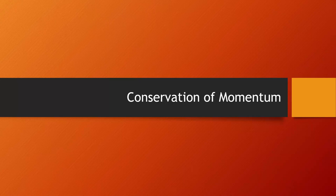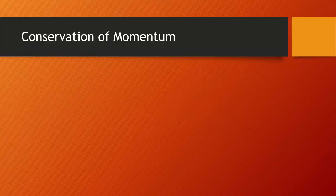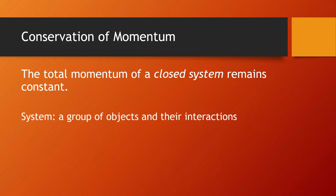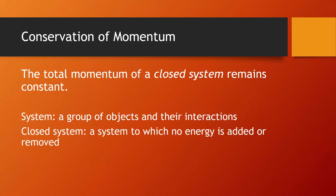This lesson is about conservation of momentum. The law of conservation of momentum states that the total momentum of a closed system remains constant. A system is a group of objects and their interactions, and a closed system is a system to which no energy is added or removed. We can write the law of conservation of momentum as P before equals P after. P before refers to the sum of the momentum of each object before an interaction, and P after refers to the sum of the momentum of each object after an interaction.